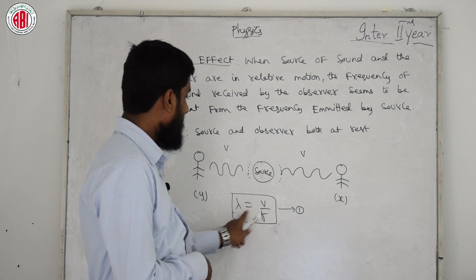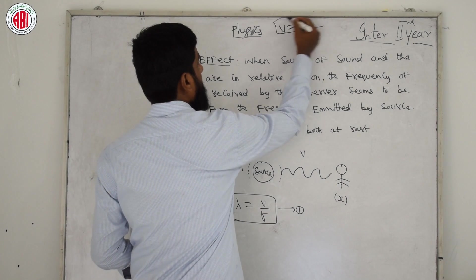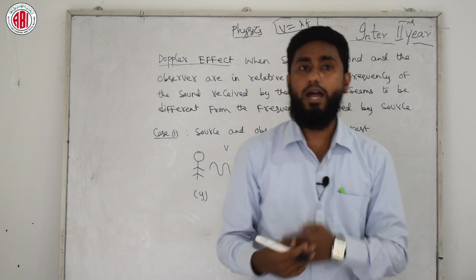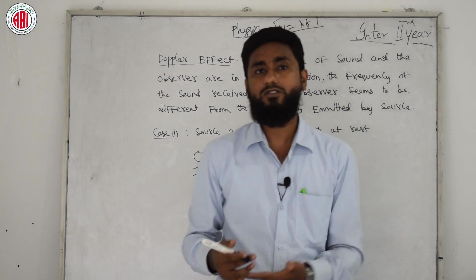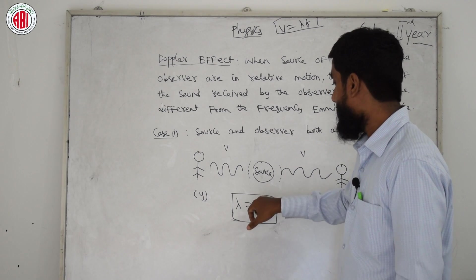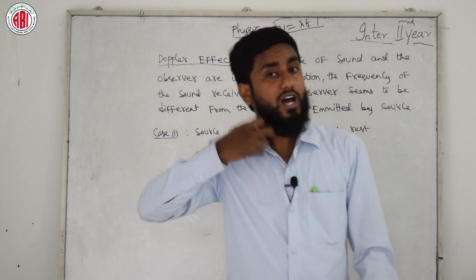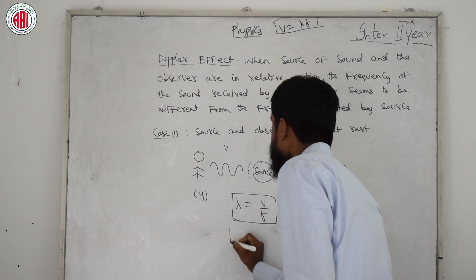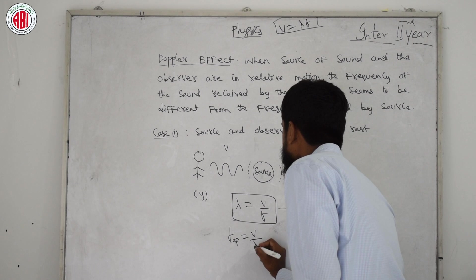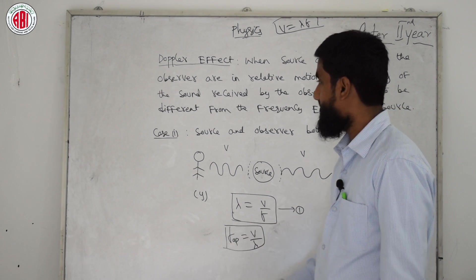We want to find the apparent frequency (f_ap) of sound heard by the observer. We have λ (wavelength), v (velocity), and f (frequency). Since nothing changes in Case 1, the apparent frequency is simply: f_ap = v/λ. There is no change in frequency — this is the result for Case 1.